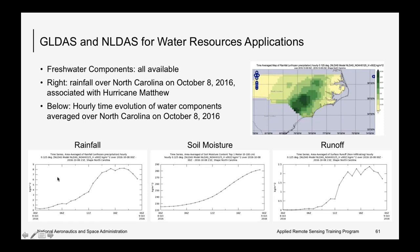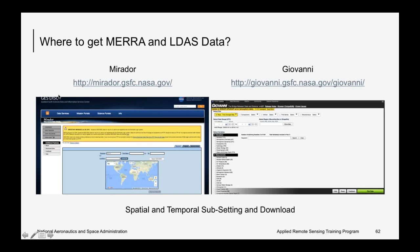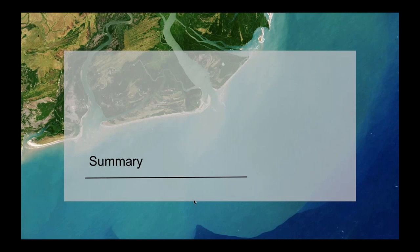MERRA and LDAS data can be obtained from two major sites: Mirador and Giovanni. Both sites have multiple datasets including MERRA and LDAS, allow spatial and temporal subsetting and downloading, and Giovanni also allows online analysis of MERRA and LDAS data.